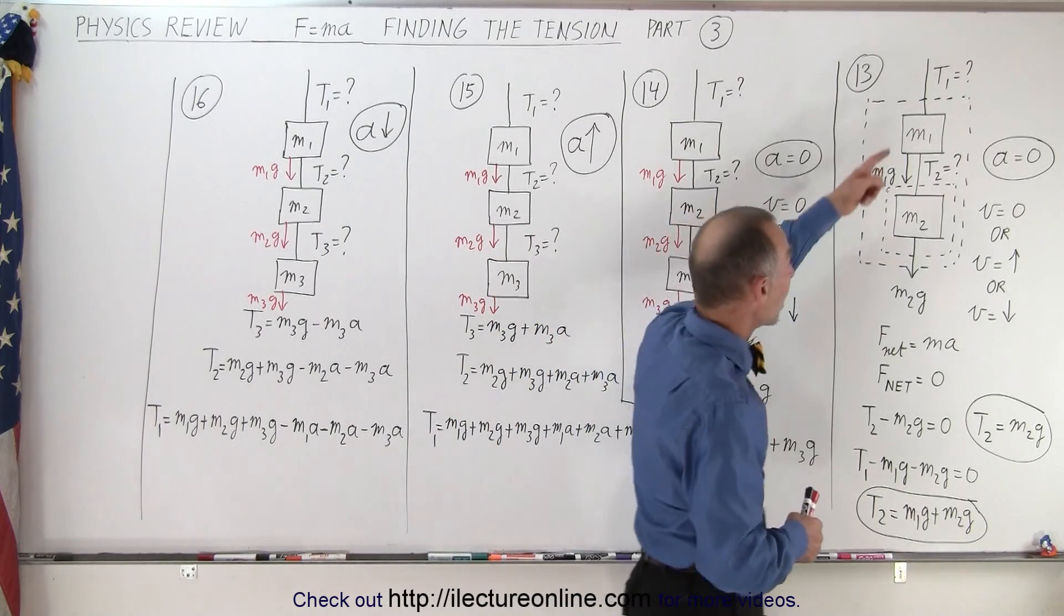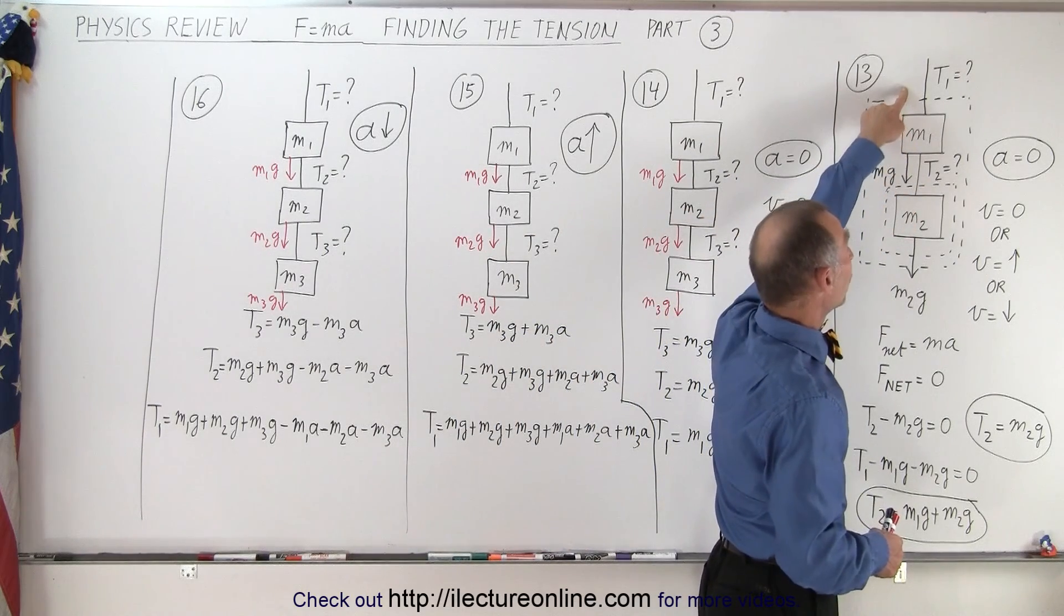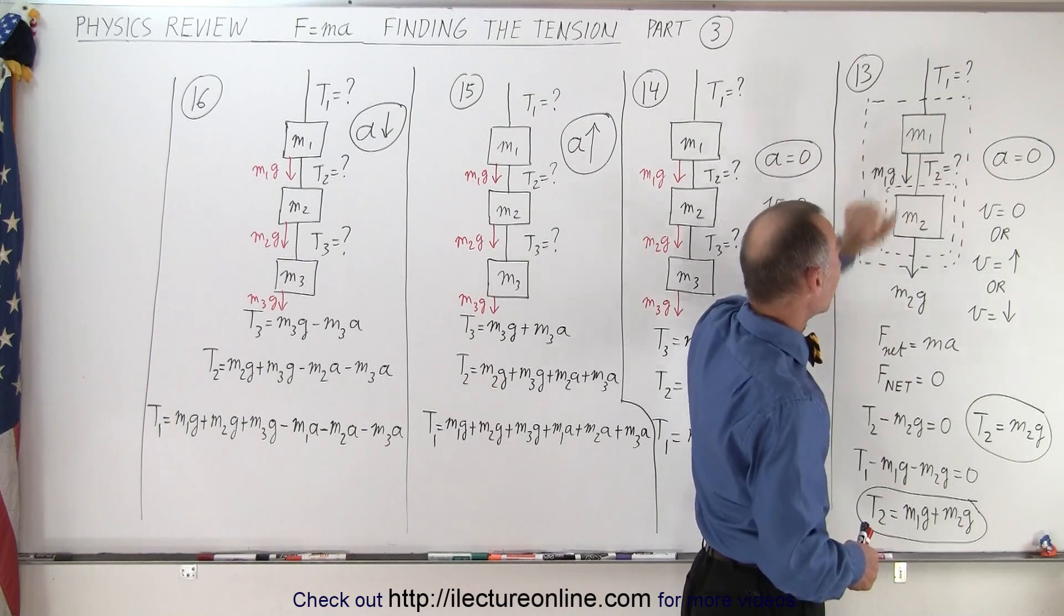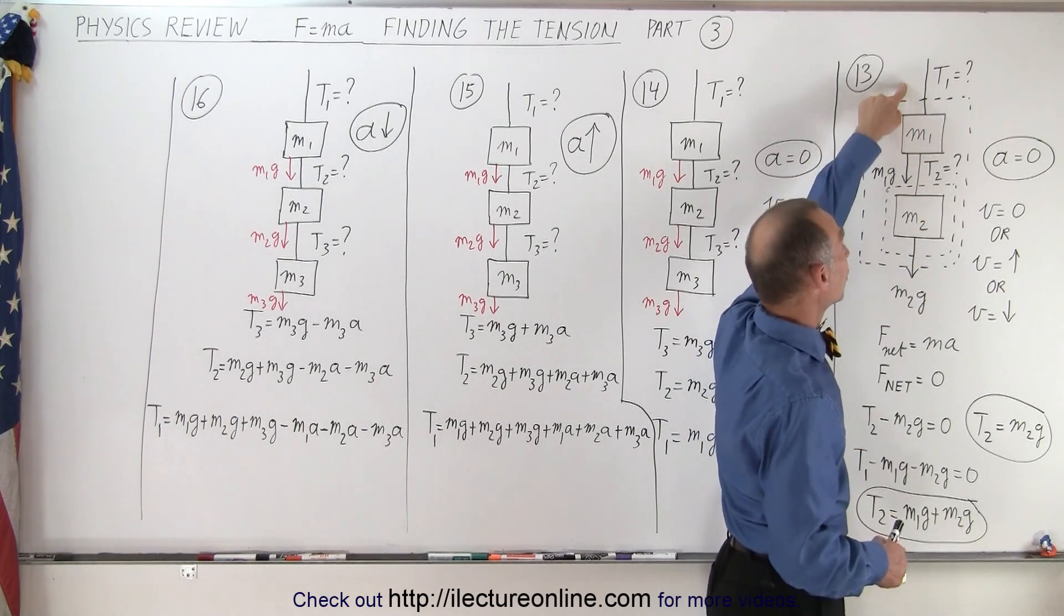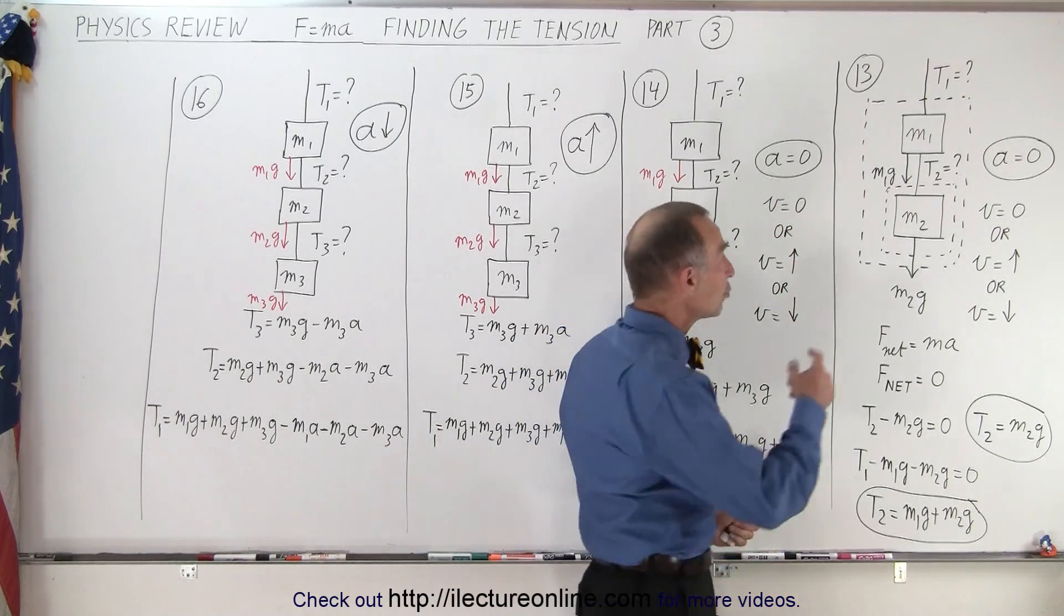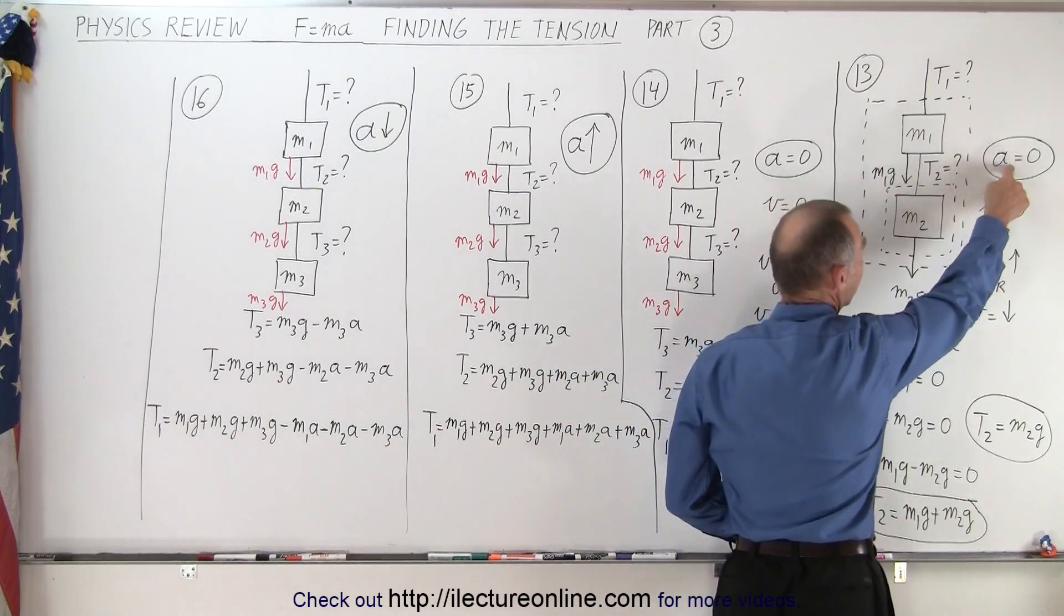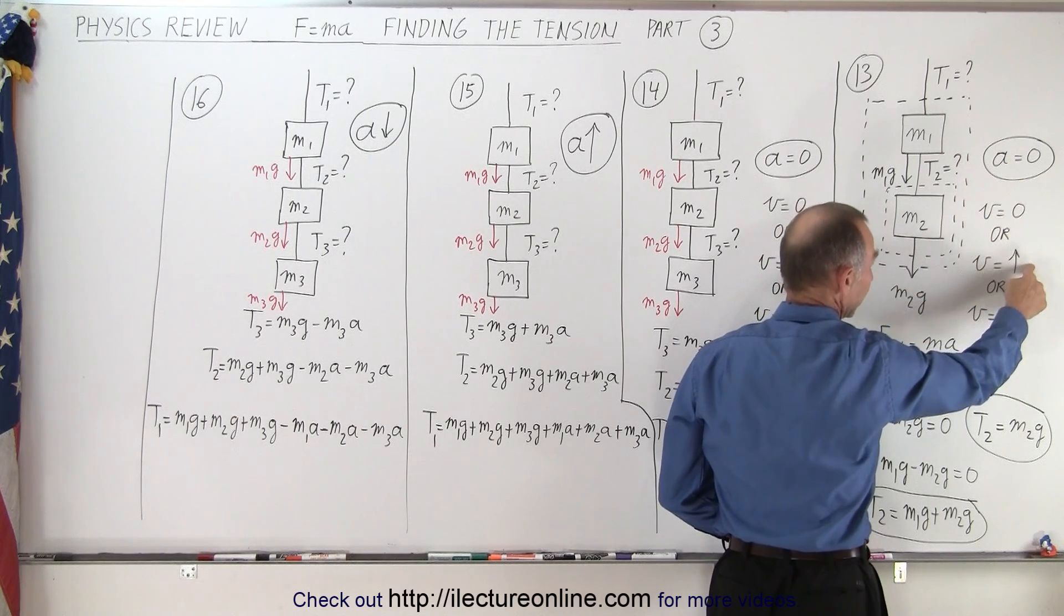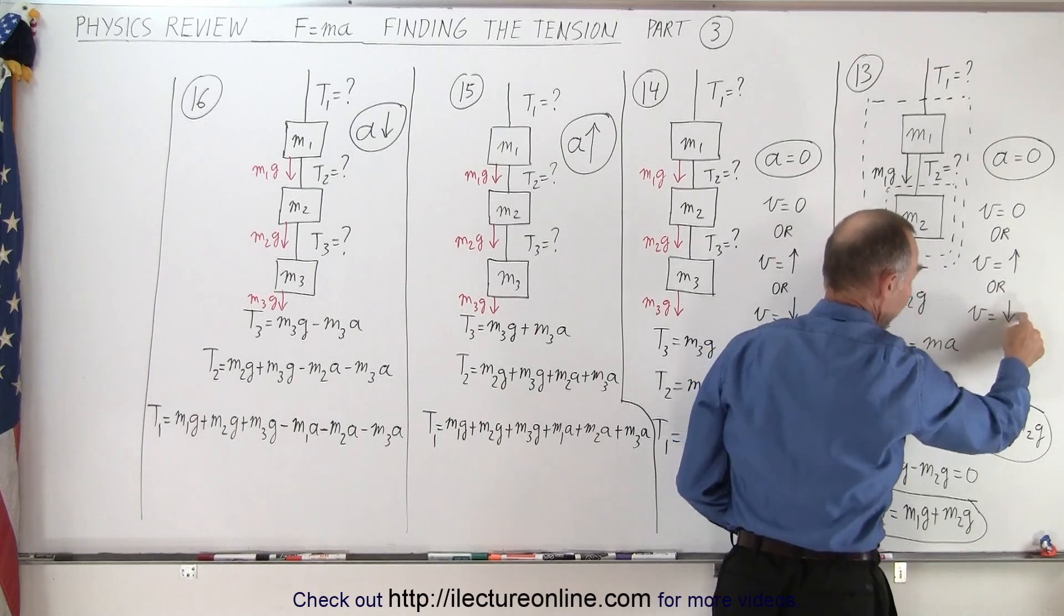First, let's look at two objects. We have a rope at the very top attached to M1, and we have a rope connecting M1 to M2, and we want to know the tension here and the tension over here. To find T2, notice the conditions are that there's no acceleration, and either there's no velocity, or the velocity is constant upward, or the velocity is constant downward.